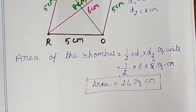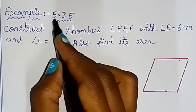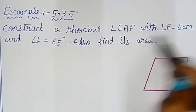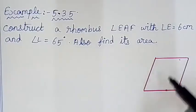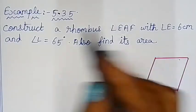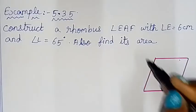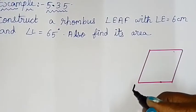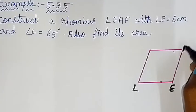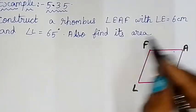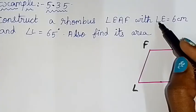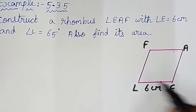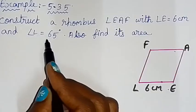Example 5.35: Construct a rhombus LEAF with given measurements. Also find the area. Using a rough diagram, label the vertices L, E, A, F. The measurements are: side equals 6 centimeters and angle L is equal to 65 degrees — an acute angle. Since all sides of a rhombus are equal, all four sides are 6 centimeters each.